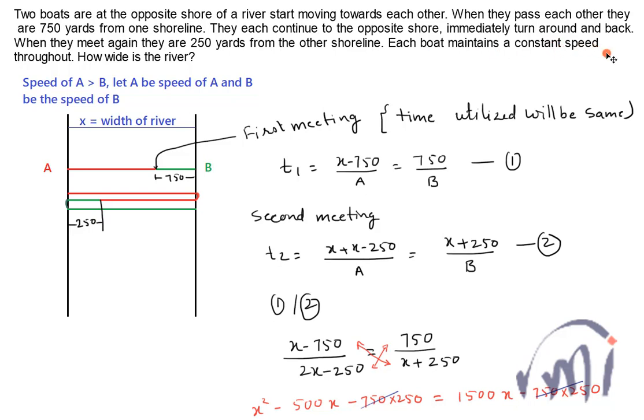Each boat maintains a constant speed throughout. How wide is the river? I have assumed that the width of the river is x.